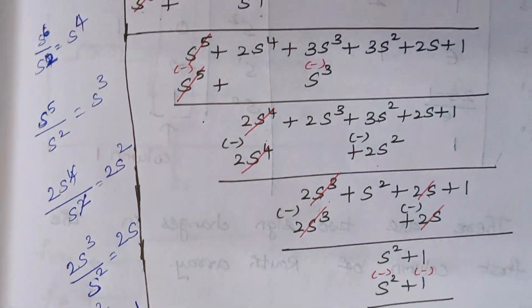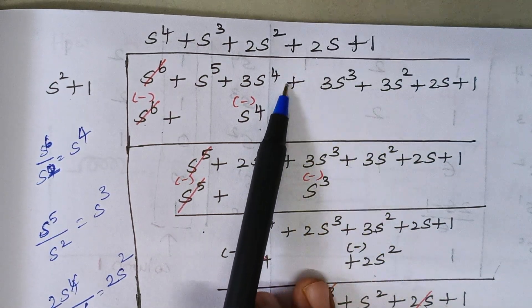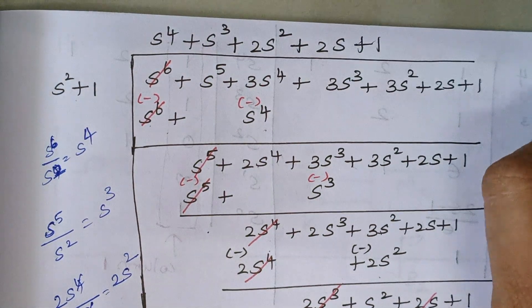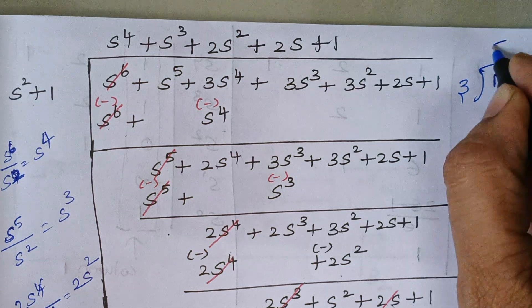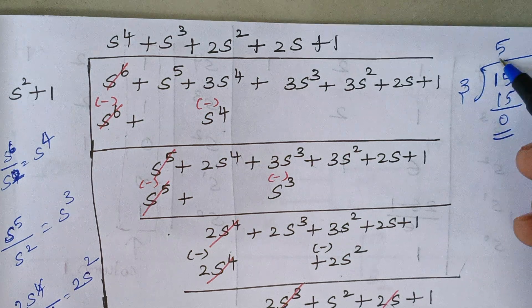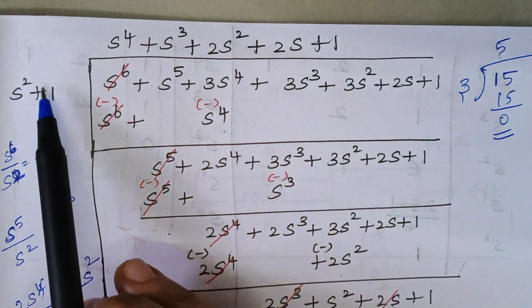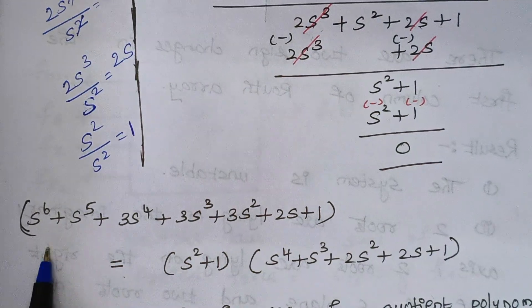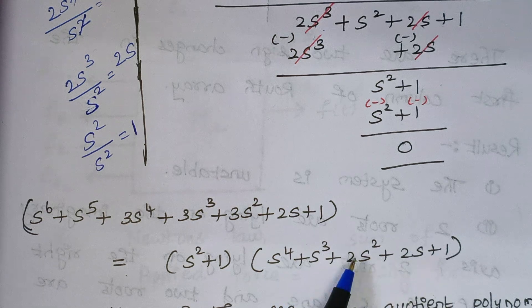So the characteristic equation can be written as a product of these two elements. For example, just like 15 divided by 3 gives 5, meaning 15 = 3 × 5, similarly this characteristic equation can be written as the product of the auxiliary equation and the quotient polynomial. So I had written it as the auxiliary polynomial multiplied by the quotient polynomial.